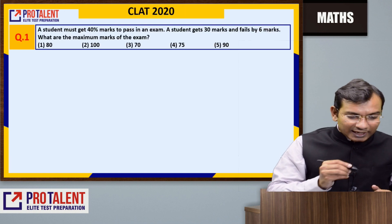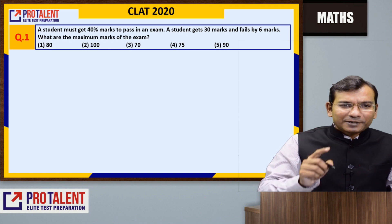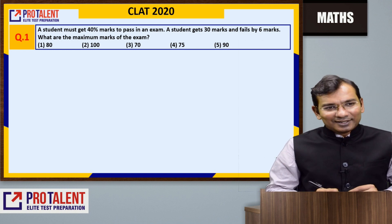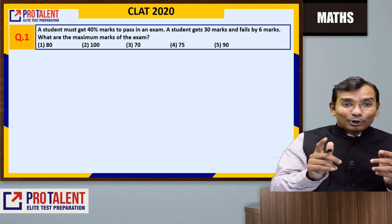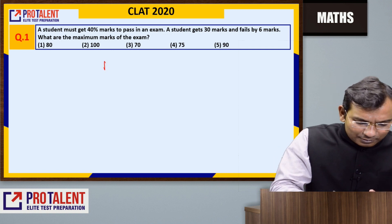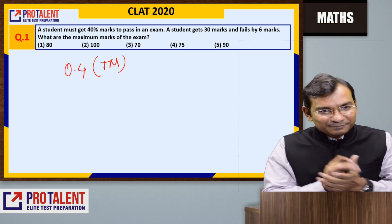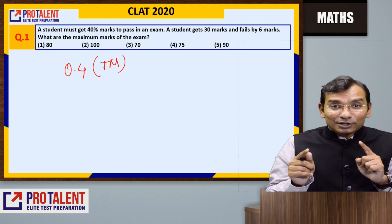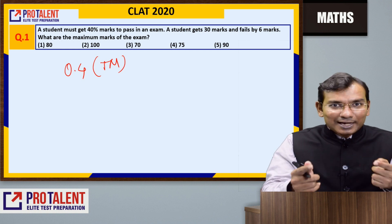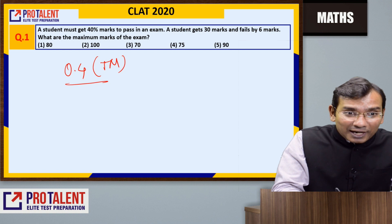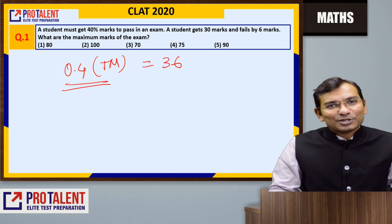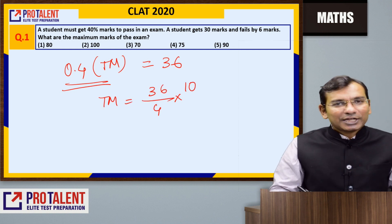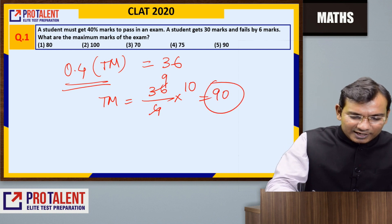First question: A student must get 40% marks to pass in an examination. A student gets 30 marks and fails by 6 marks. What are the maximum marks for the exam? The passing marks are 30 + 6 = 36. Total marks = 36 divided by 4/10, which gives total marks = 90. Easy question.